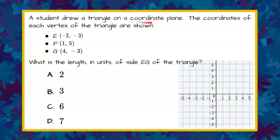A student drew a triangle on a coordinate plane. The coordinates of each vertex of the triangle are shown. We have E with the ordered pair (-2, -3), F with the ordered pair (1, 5), and G with the coordinates (4, -3). What is the length in units of side EG of the triangle?